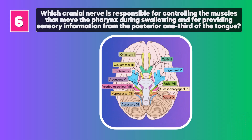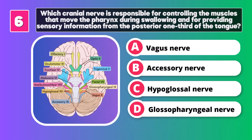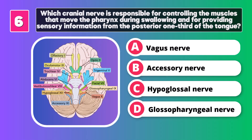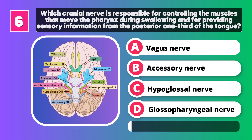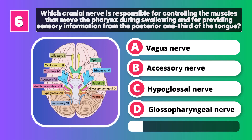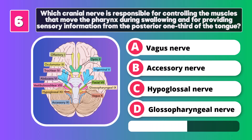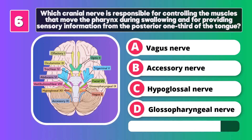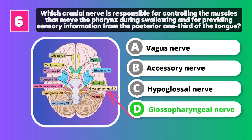Which cranial nerve is responsible for controlling the muscles that move the pharynx during swallowing and for providing sensory information from the posterior one-third of the tongue? Glossopharyngeal nerve.